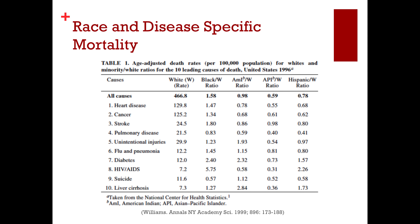That holds true when you're looking at pretty much all of the top 10 causes of death. For all-cause mortality, African Americans are 58% more likely to die than whites. American Indians are close in ratio for all-cause mortality, but for specific things like unintentional injuries, diabetes, and liver cirrhosis, they have much higher death rates.